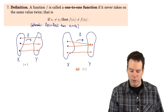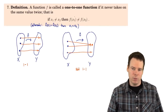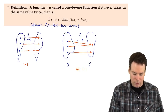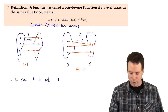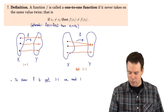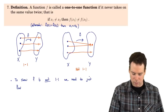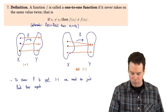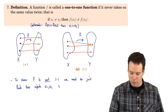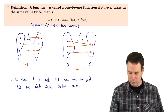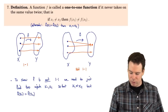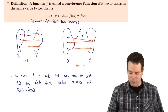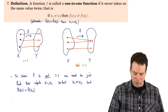So when we're asked to show a function is one-to-one or not one-to-one, how do we actually do that? To show f is not one-to-one, we need to find two input values, x₁ and x₂, such that they are different but the values of the function are the same. We just need one example — we need to find two input values which are different so that the function values are the same.